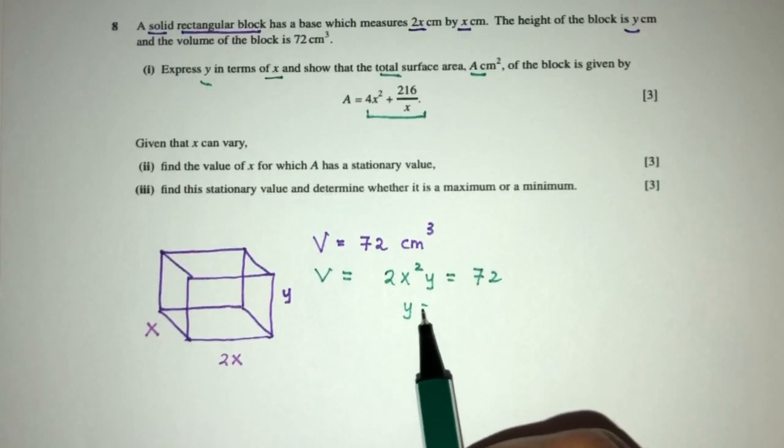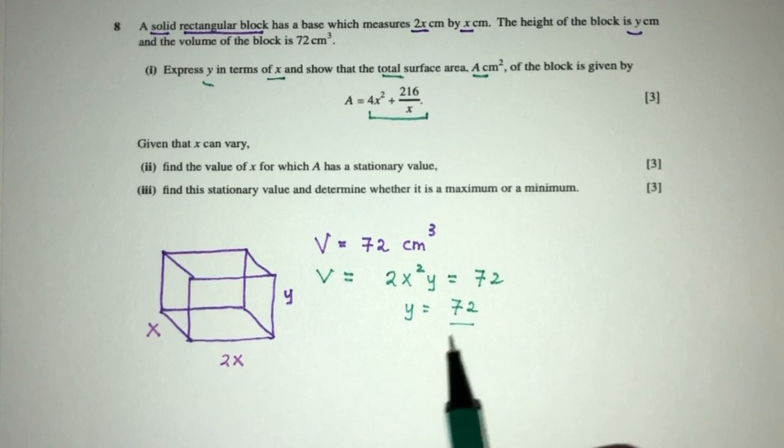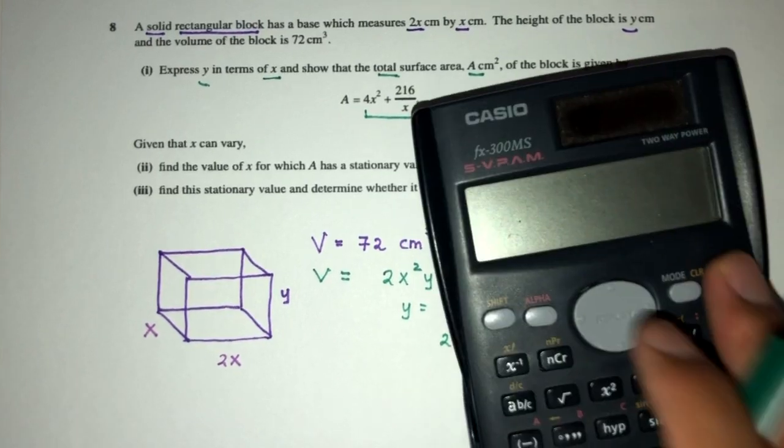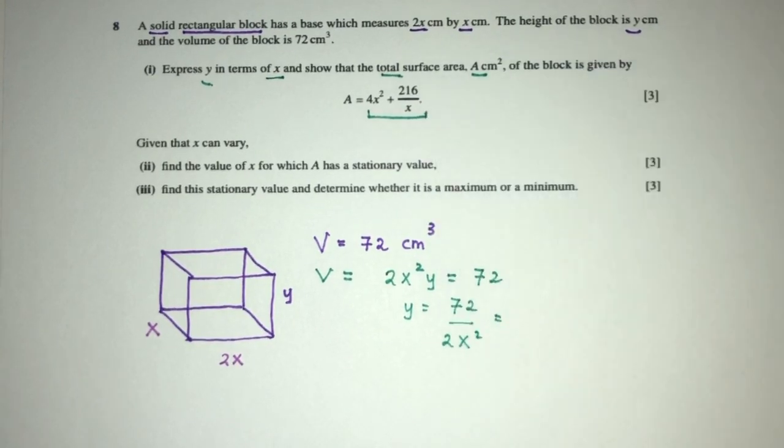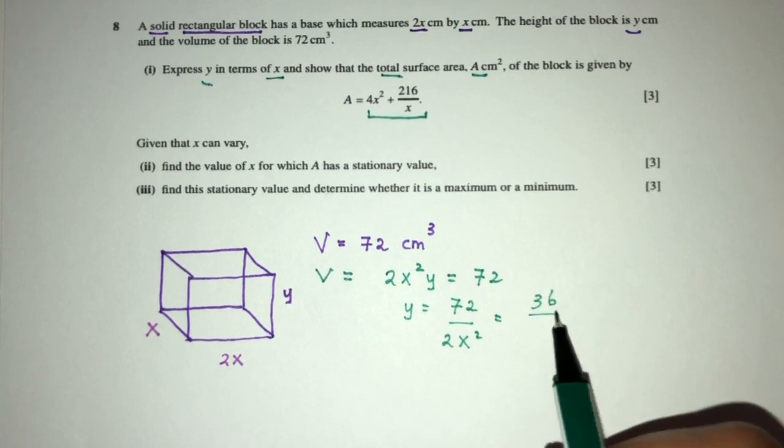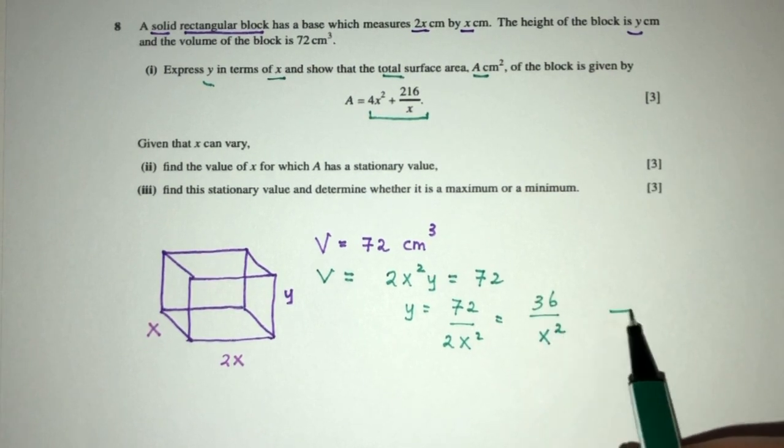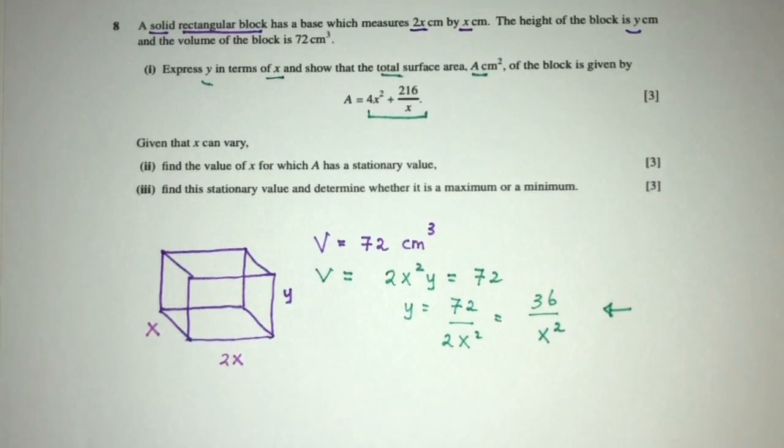And then y will be 72 divided by 2x squared. Simplify, 72 divided by 2, that should be 36. You will have 36 over x squared. This is part one, y in terms of x.